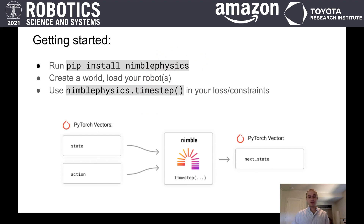You can install it with pip install NimblePhysics. Just like other engines, you can load robots from URDF files or a number of other common file formats. Then you can use our differentiable time step function called time step with PyTorch tensors as inputs and outputs. Feel free to interleave neural network components and physics simulation steps in any order and configuration you desire, and the gradients will flow unobstructed through your whole computation graph.